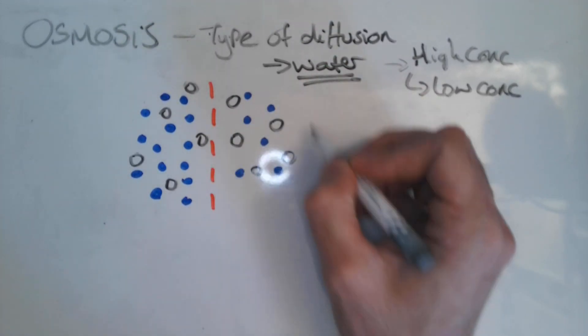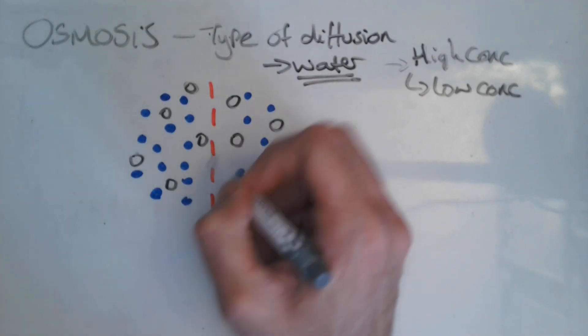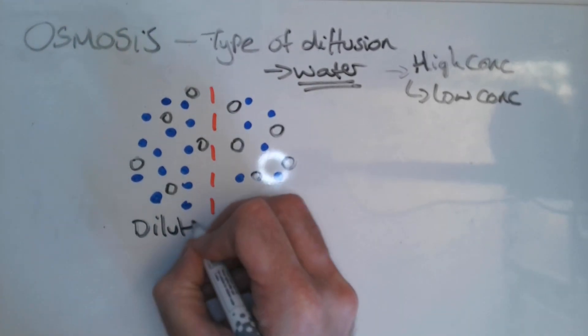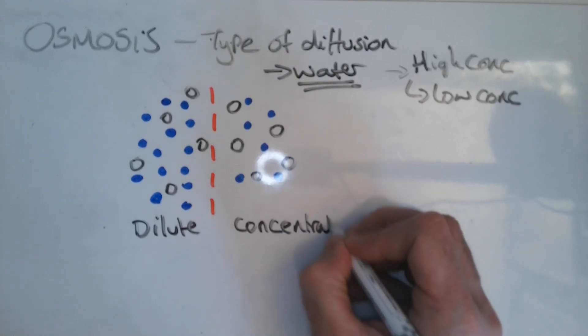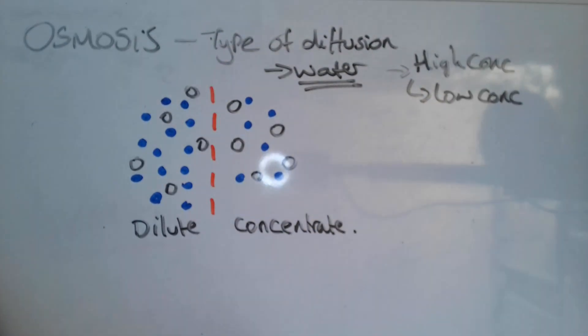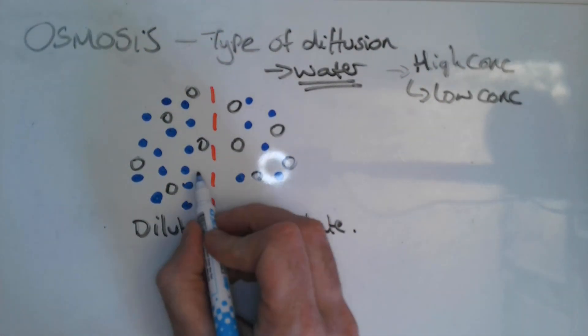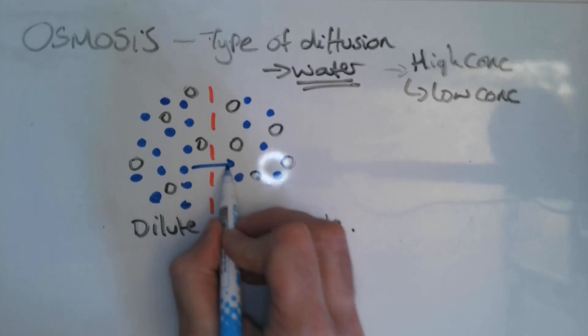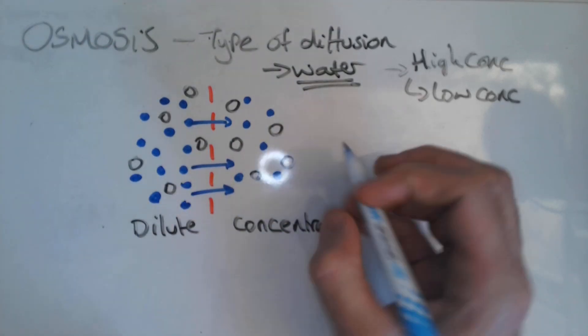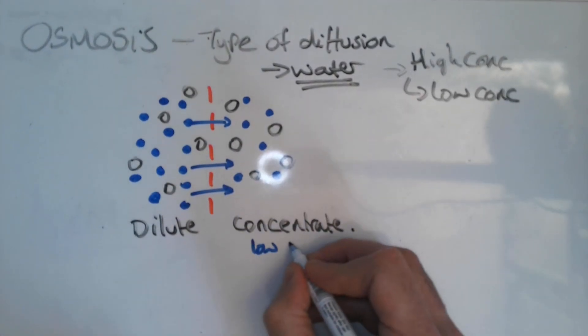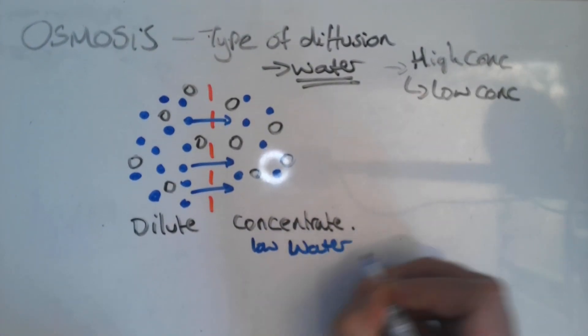So this is a more concentrated solution and this is a more dilute solution. And what's going to happen is my water particles are going to diffuse down the concentration gradient to the more concentrated solution, or the solution with the lower water potential or water concentration.